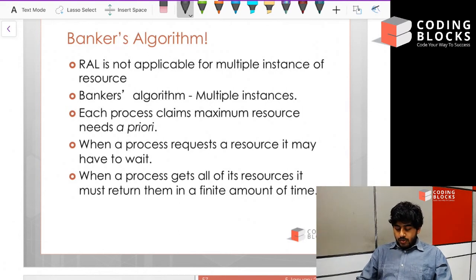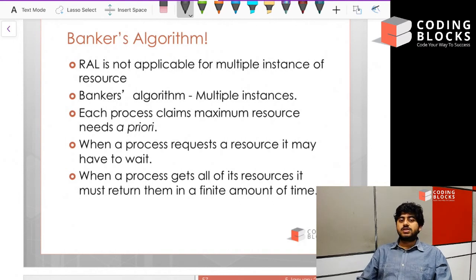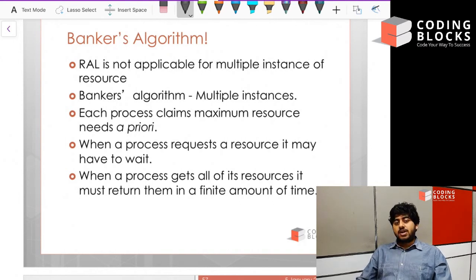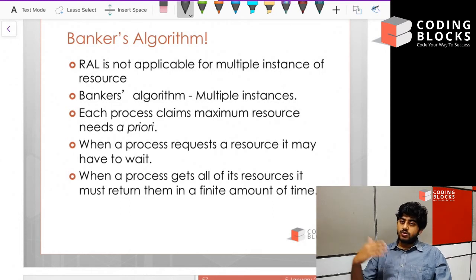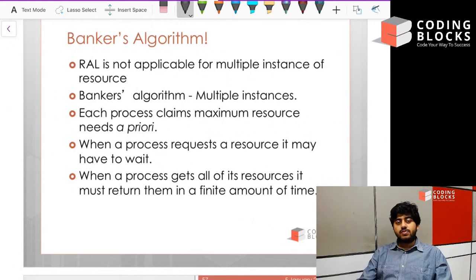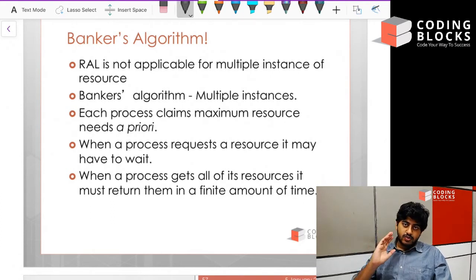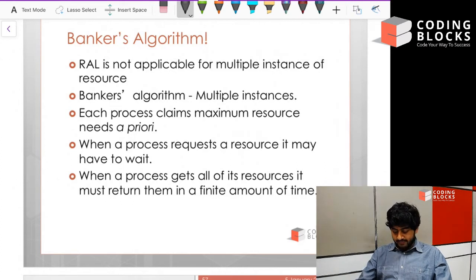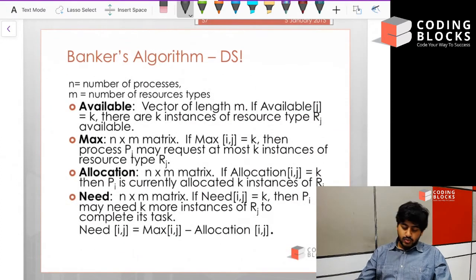When a process requests a particular resource, we check if giving that resource to that process will lead us to a safe or unsafe state. If it leads to a safe state we allocate it; if it leads to an unsafe state, we make that process wait.